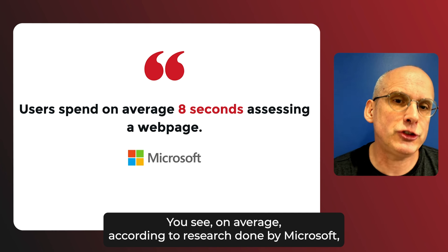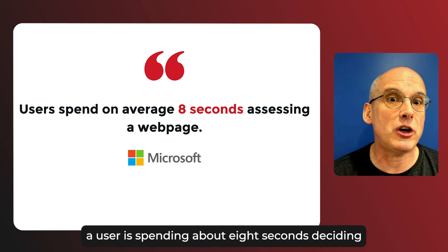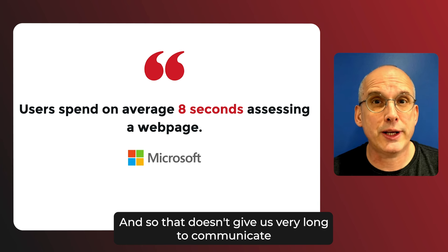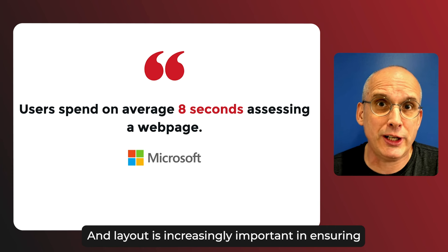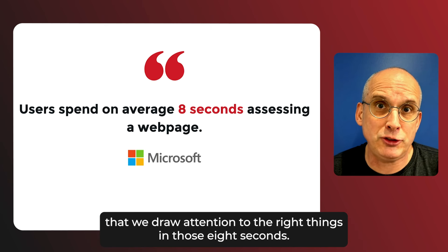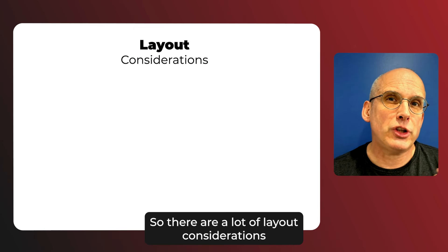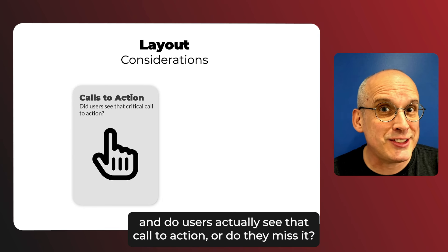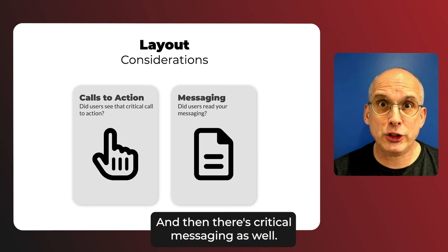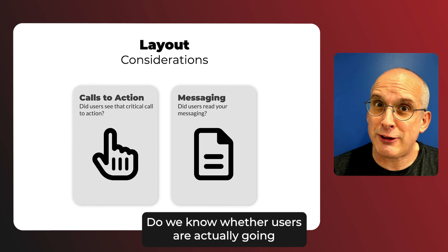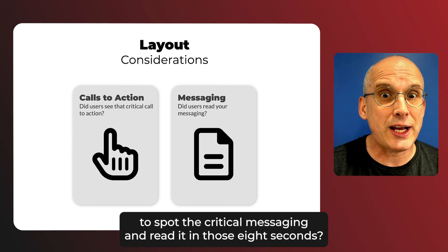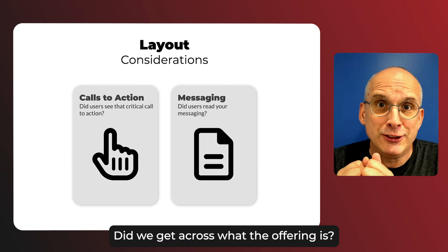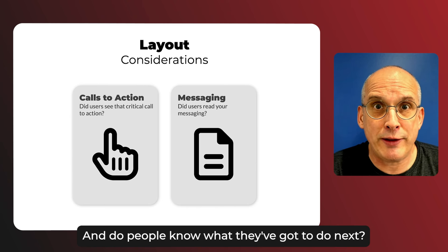AI can help us know how to structure our pages in such a way that we draw people's attention to the things we want them to see. On average, according to research done by Microsoft, a user spends about eight seconds deciding whether or not this page is right for them — so that doesn't give us very long to communicate our messages. Layout is increasingly important in ensuring we draw attention to the right things in those eight seconds: do users see the call to action, and do they spot the critical messaging?